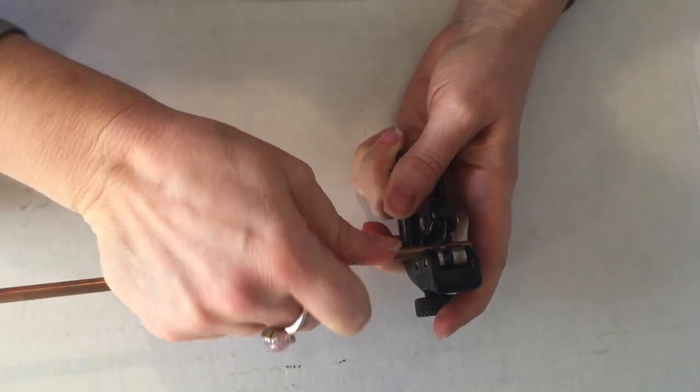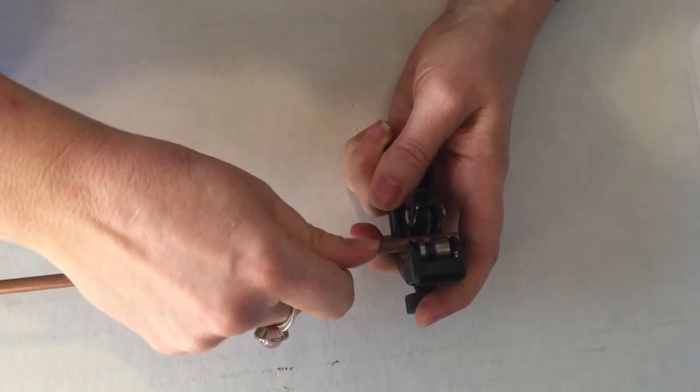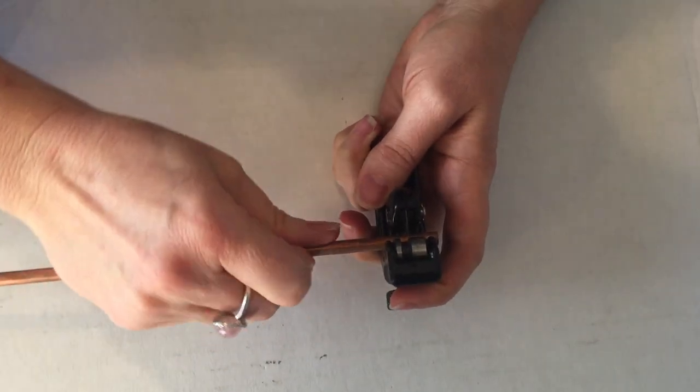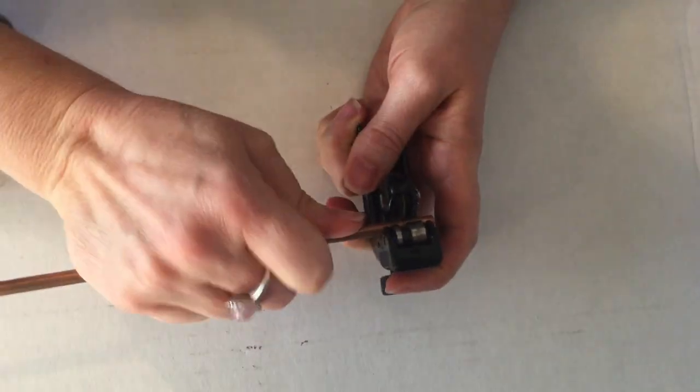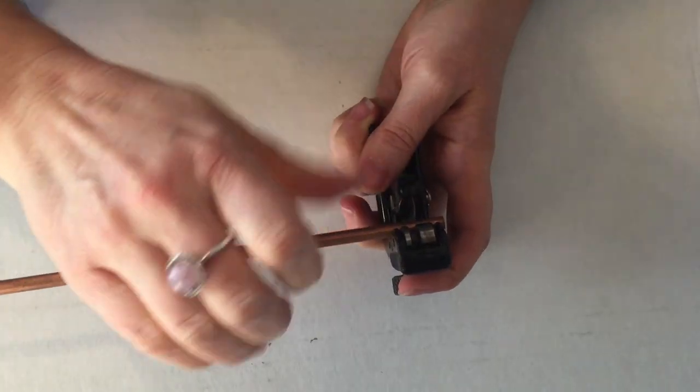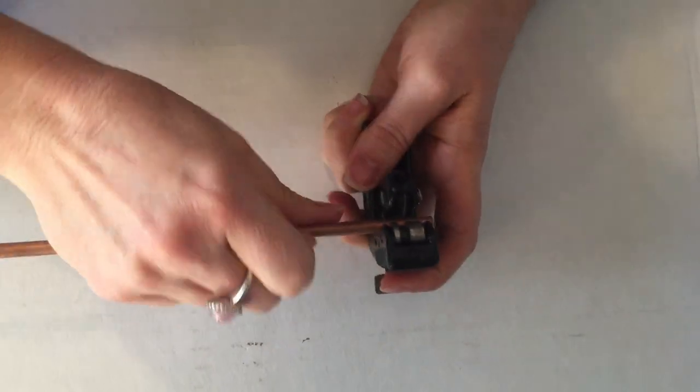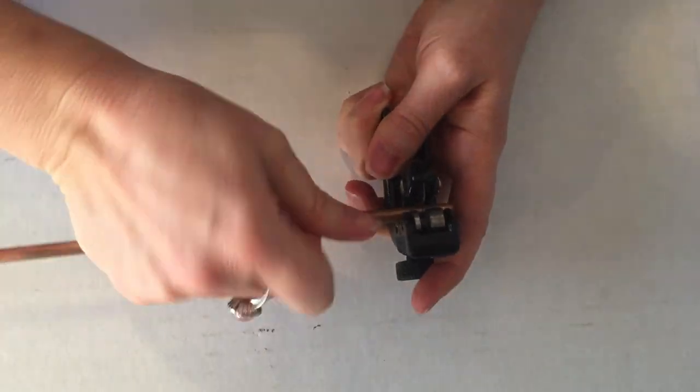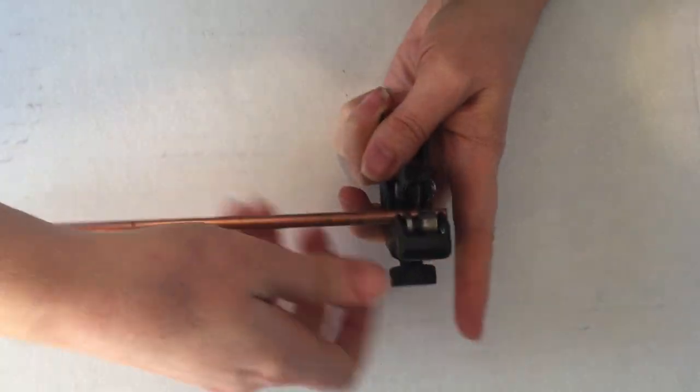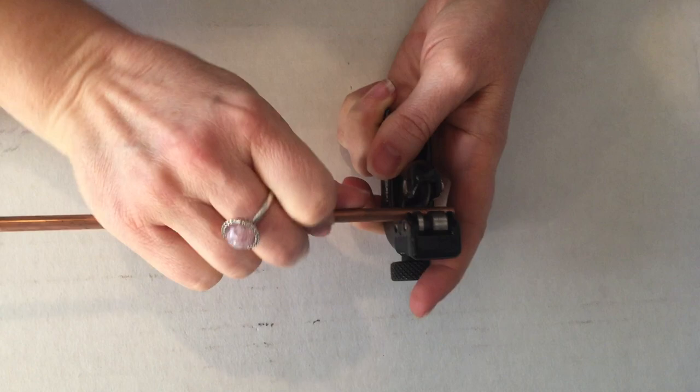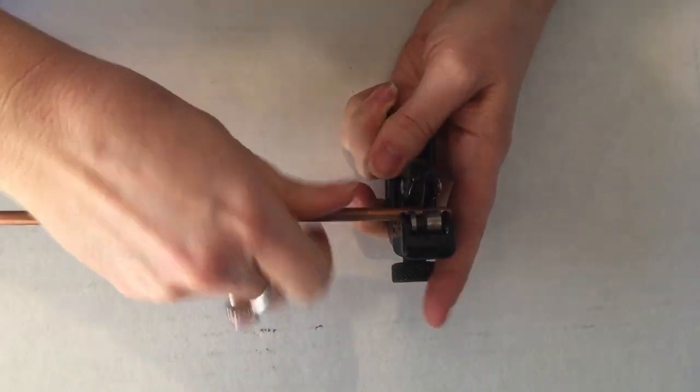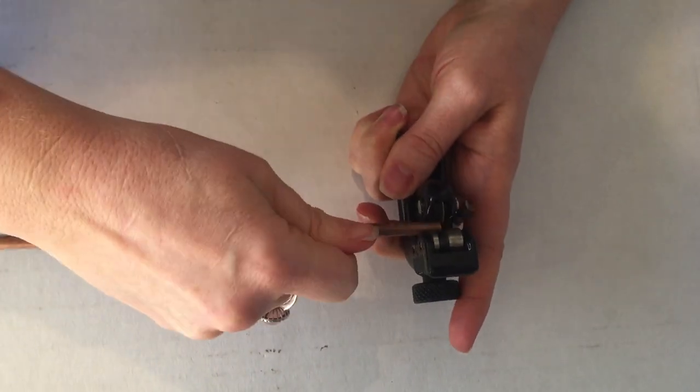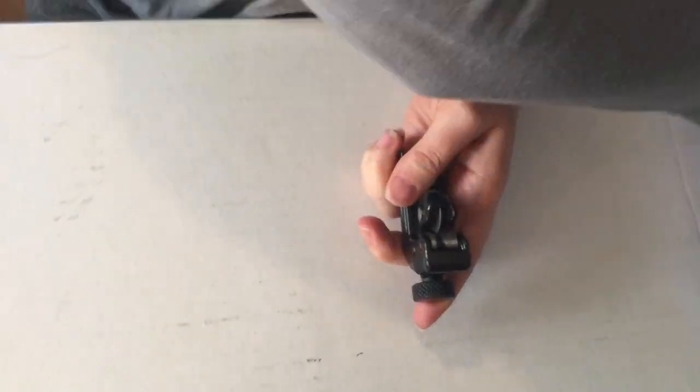Now I really want to get one of the electric ones with the diamond saw blade. I don't know why I haven't gotten it yet because it's just like and it's done. So we're almost there. Do this a few times.